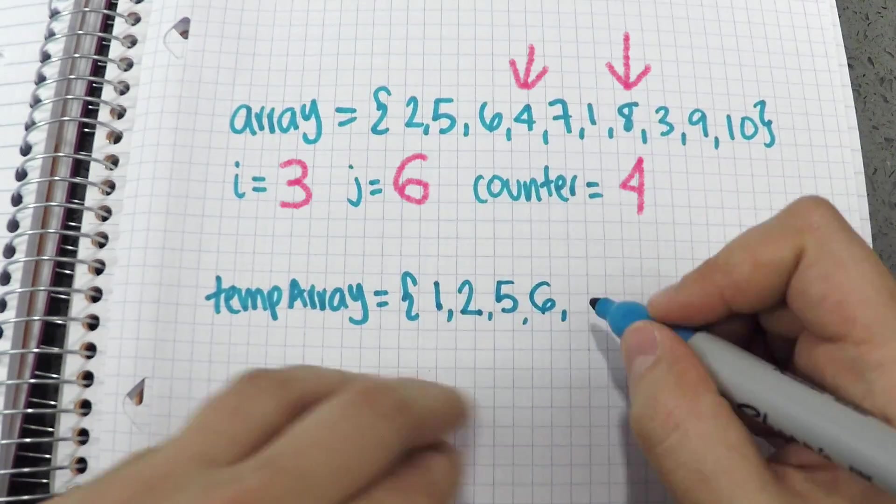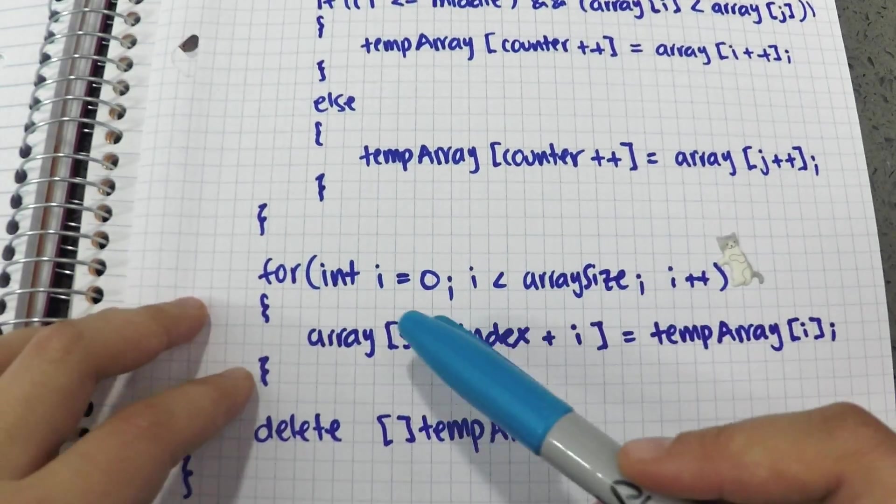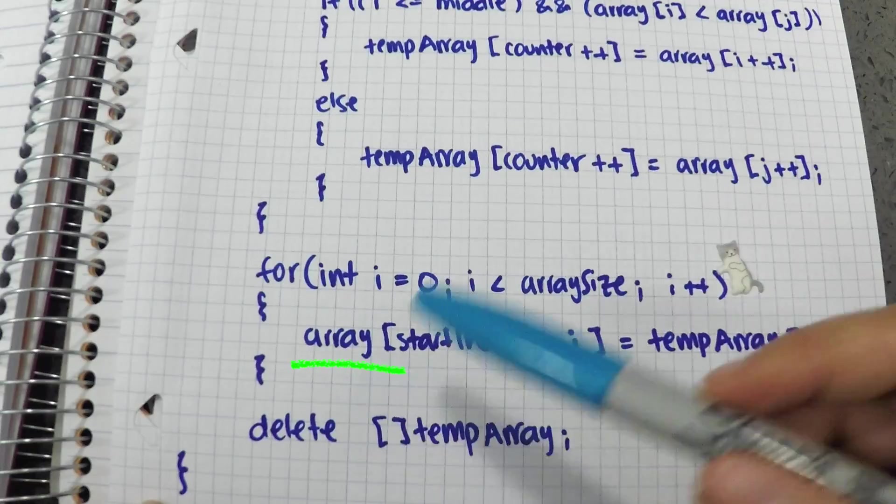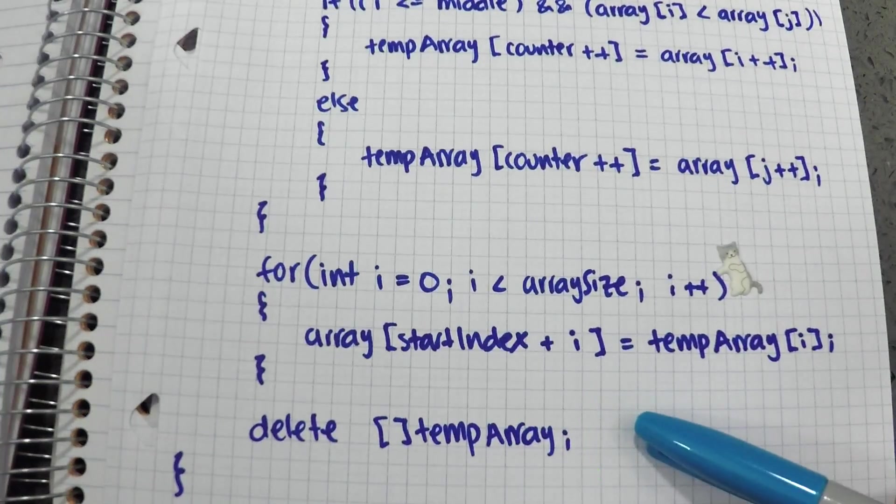We continue to iterate until we go through the entire array. Once I have the sorted subarray, I go through a for loop to move all the elements from the temporary array into the original subarray. Then, I delete temporary array to clear up memory.